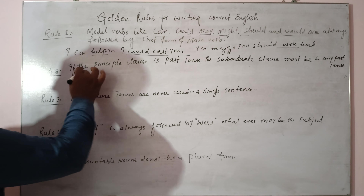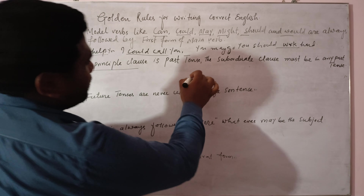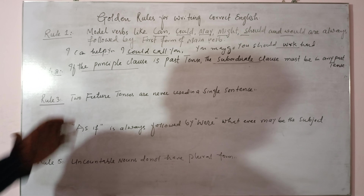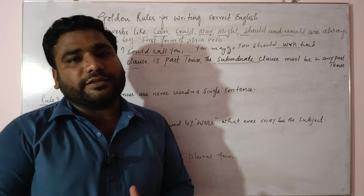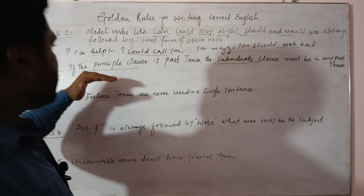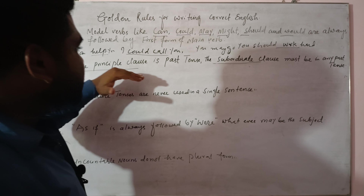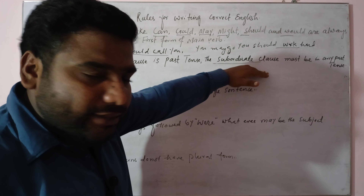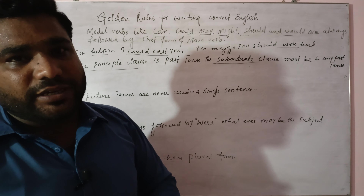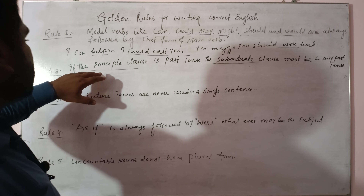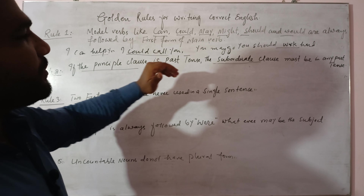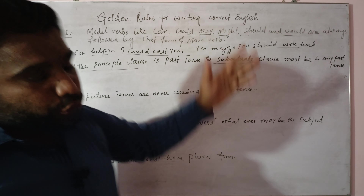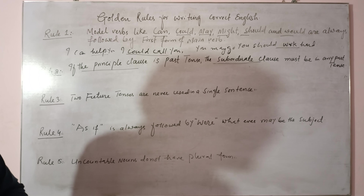Rule number two: if the principal clause is in past tense, the subordinate clause must also be in some past tense. Matlab jab bhi hum tense istemal karte hain, agar principal clause past mein hai to subordinate clause bhi kisi na kisi past tense mein honi chahiye. Aisa nahi ho sakta ke principal clause past mein aur subordinate clause future ya present mein ho.